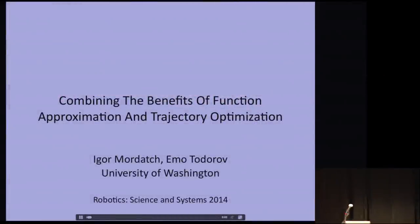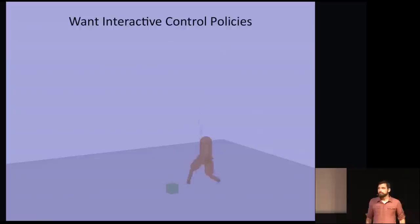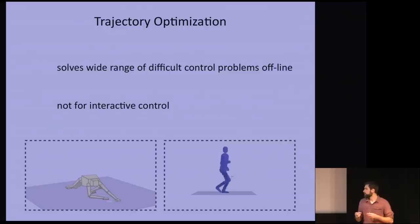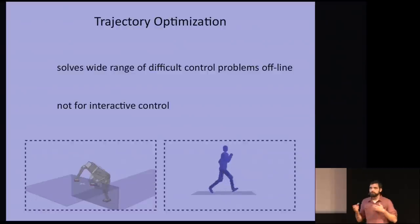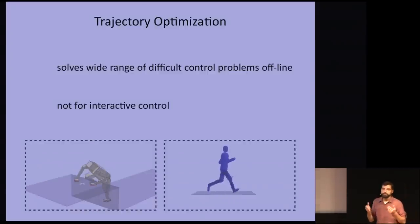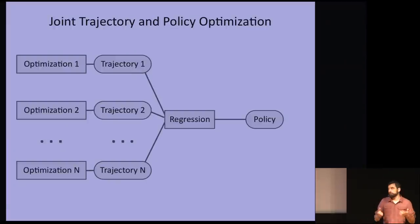Hi, I'm Igor from University of Washington. And in this talk, I'm going to discuss using trajectory optimization to help training of very general policies based on neural networks that can be used for interactive control. Now learning general control policies has been a very difficult optimization problem. And typically a lot of assumptions needed to be made. However, one very promising approach that we have been pursuing in our lab has been to use trajectory optimization.